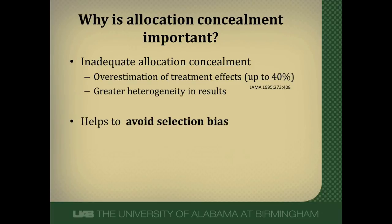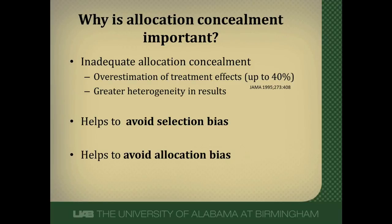Allocation concealment also helps to avoid selection bias. Selection bias here is a little different than in a case-control study — it refers to systematic differences between patients recruited to a trial and those who were not, so the trial population is not representative of the patient population. This can happen when you hold patients out for certain treatments. It also helps avoid allocation bias, which is systematic differences between participants in how they were randomized to treatment — because you can figure out the randomization scheme and put patients with different prognoses into one arm or another.